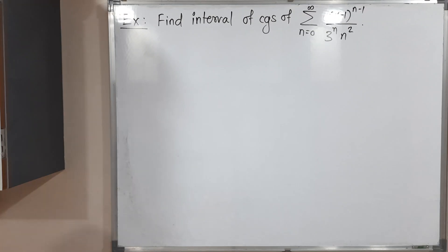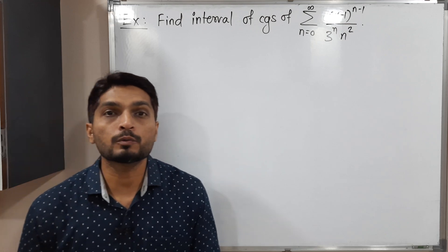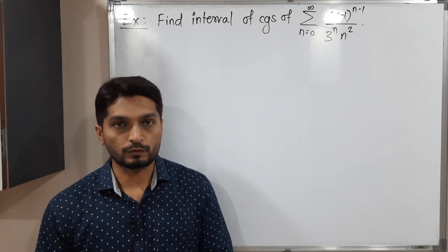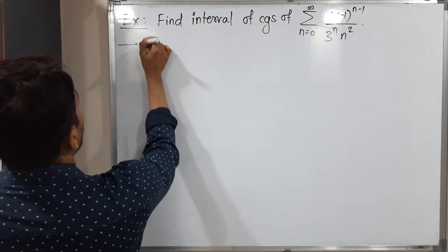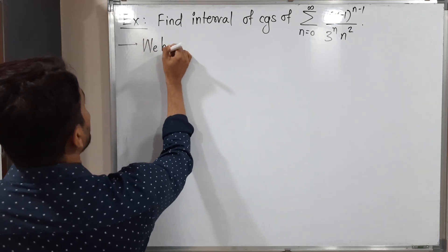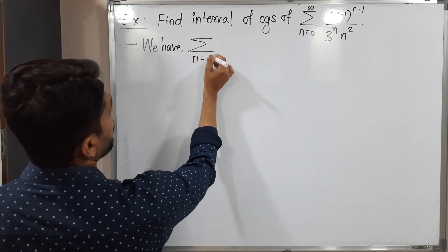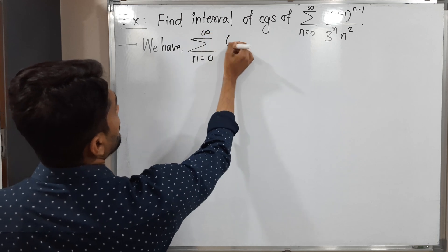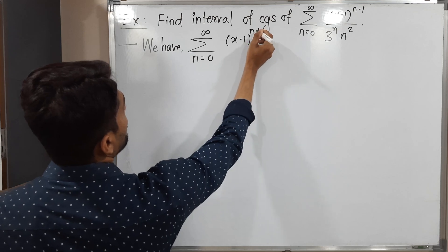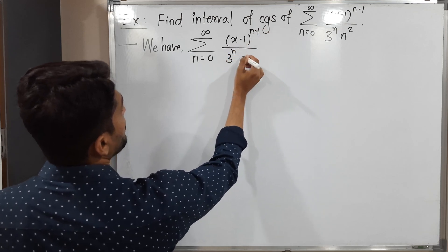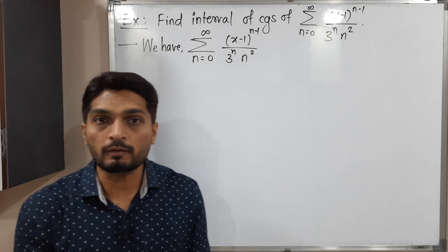Hi everyone. In this video we are going to discuss this example. We have this power series — summation n running from 0 to infinity of (x minus 1) raised to (n minus 1), divided by 3 raised to n times n squared — and we have to find its interval of convergence.